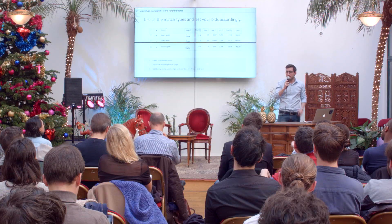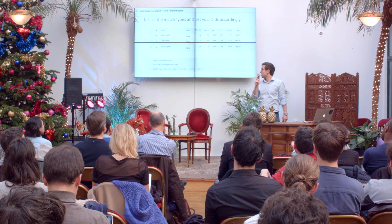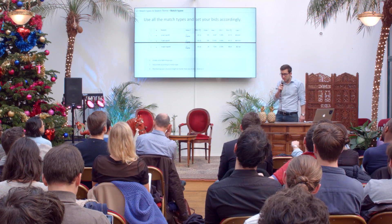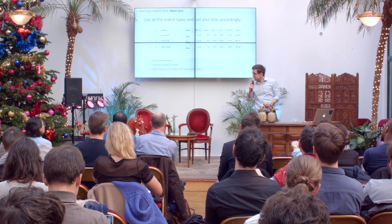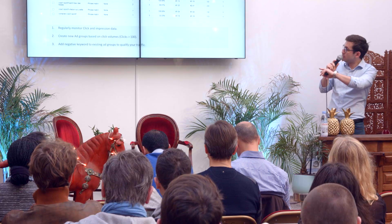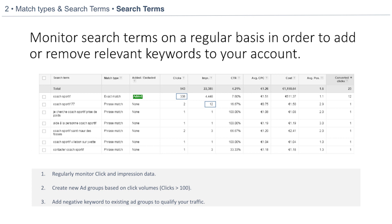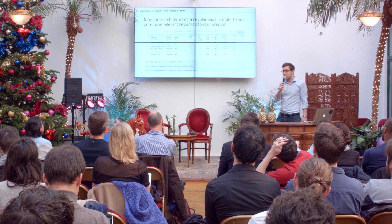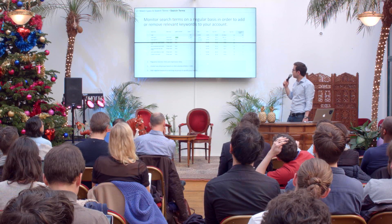Why would you want to add other match types? Because you never know what people type on search engines, and you might want to appear for terms related to your search term but not exactly it. You really want to appear for all different types of keywords. Maintaining your structure might be harder than you think, because once you look at the search term report — in this report you see exactly what users typed when they saw your ad. As you can see, 'Coach Sportif 77' or 'Coach Sportif Samor des Fossés' was generated by your phrase match keyword.